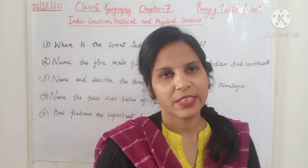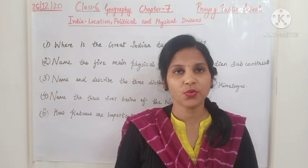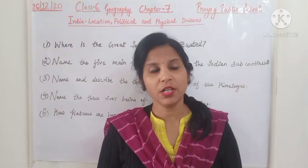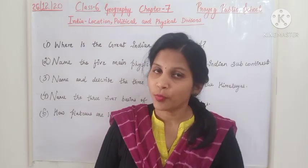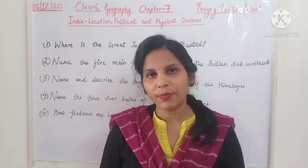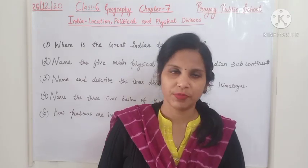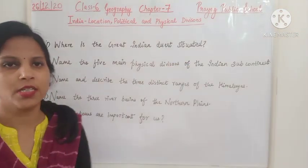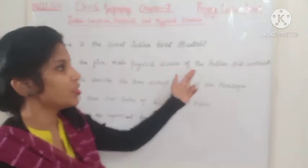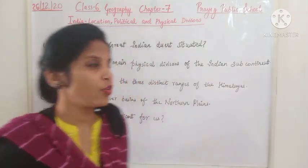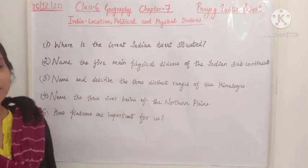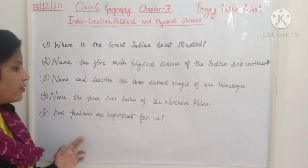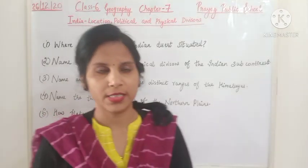That's all for today. I have explained the chapter and I hope you have understood it well. Please go through the chapter, learn all the key terms, write them down, and learn all the exercises and question answers. Today's homework: Question 1 — Where is the Great Indian Desert situated? Question 2 — Name the five main physical divisions of the Indian subcontinent. Question 3 — Name and describe the three distinct ranges of the Himalayas. Question 4 — Name the three river basins of the Northern Plains.